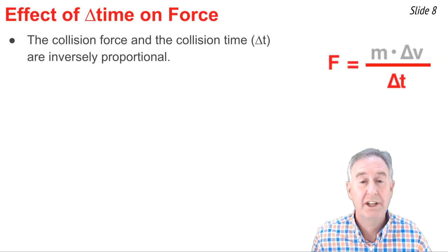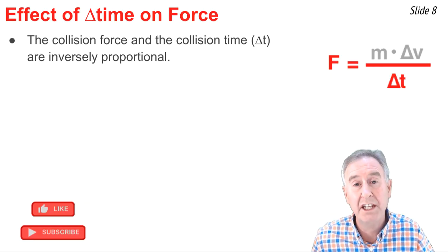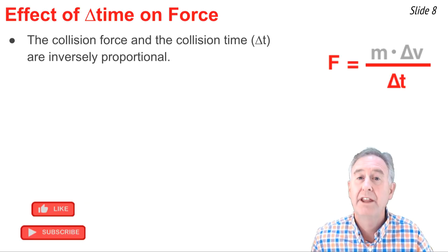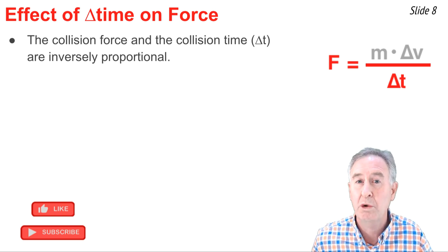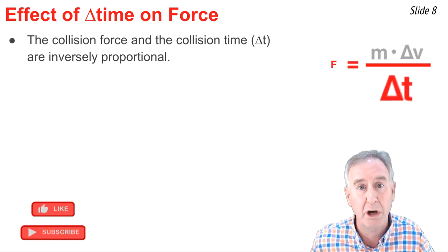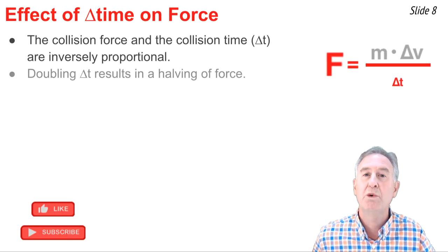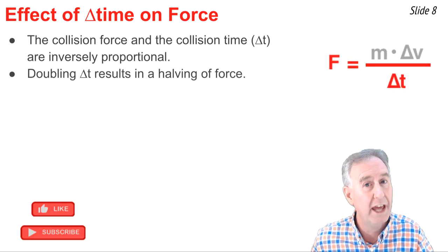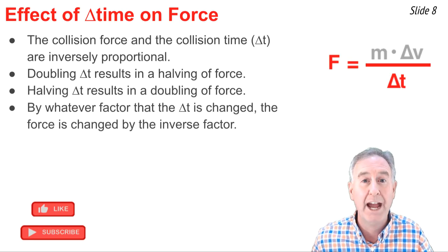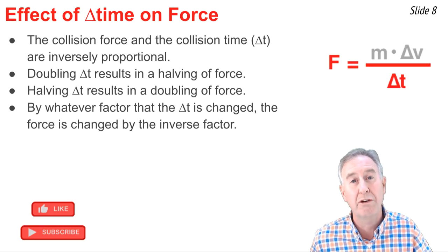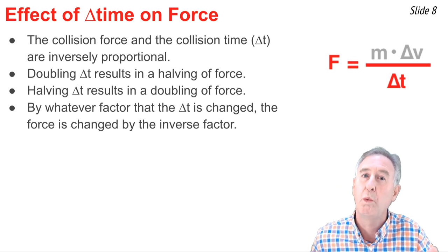The final variable to consider is the collision time, delta T. In the equation, force is on one side and delta T is in the denominator on the opposite side, which tells us the collision force is inversely proportional to the collision time. If you make the collision time bigger, you make the force smaller; if you make delta T smaller, you make the force larger. Doubling delta T would half the force; halving delta T would double the force. By whatever factor you change delta T, you change the force by the inverse or reciprocal factor — three times the delta T means one-third the force.